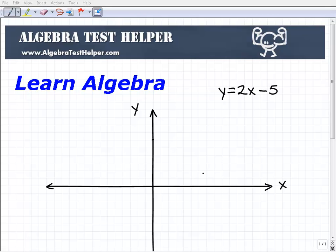Welcome to this practice prompt from AlgebraTestHelper.com. What we're going to do here is graph the line y equals 2x minus 5.